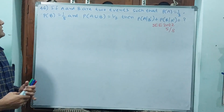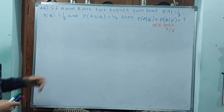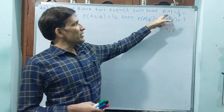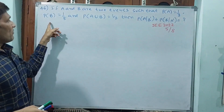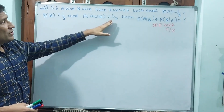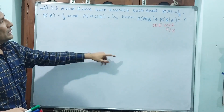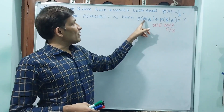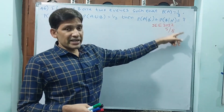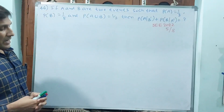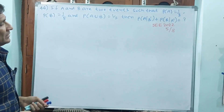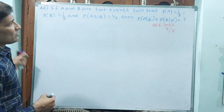Okay, see question number 46. If A and B are two events such that probability of A is 1 by 3, probability of B is 1 by 5, and probability of A union B is 1 by 2, then probability of A condition B dash plus probability of B condition A dash is how much? And this should come 5 by 8. Let us try to solve this.